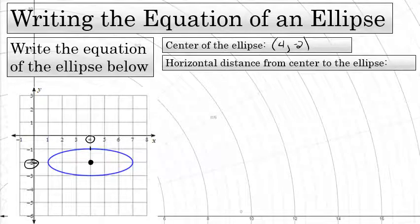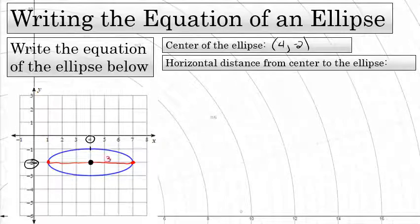The next property you want to identify is the horizontal distance from the center of the ellipse to the left — how many units does it take to get from the center of the ellipse to the edge directly to the right or directly to the left? That will be the same value if you've identified the center correctly, and in this case that's three units.